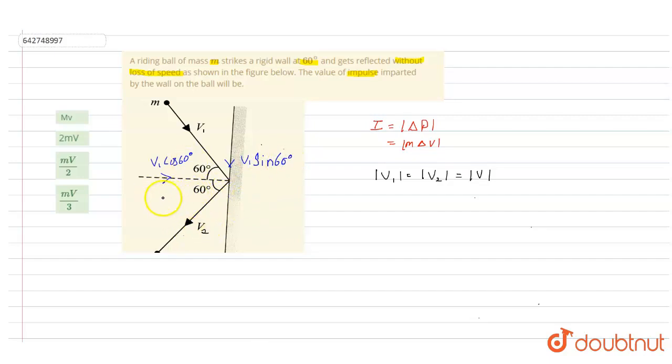And for v2, this will be along the x direction, v2*cos 60 degrees, and along y direction, v2*sin 60 degrees.